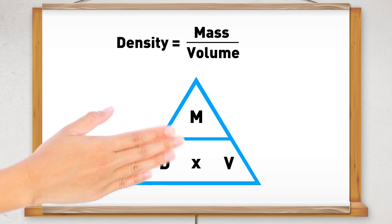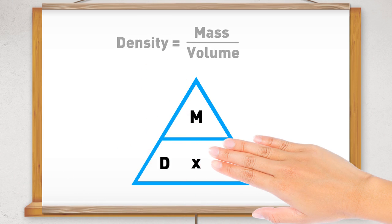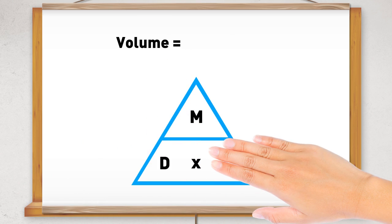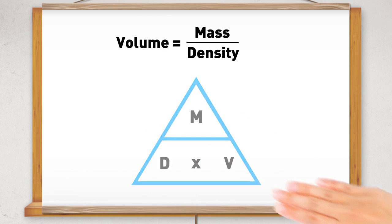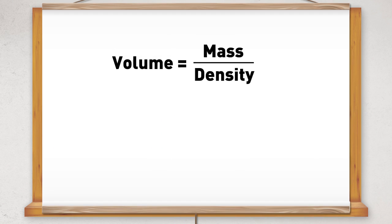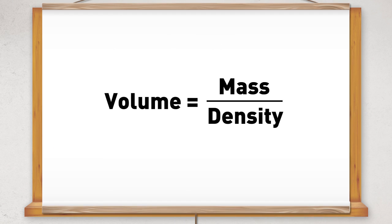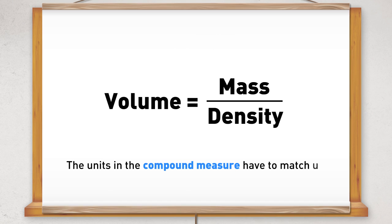If we want to calculate the volume, we cover up the V, which gives us the calculation mass divided by the density. If one of the quantities given is the compound measure of density, we need to make sure that the units in the compound measure match up with the units in the other given quantity.